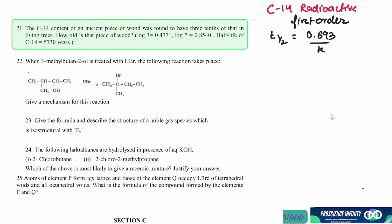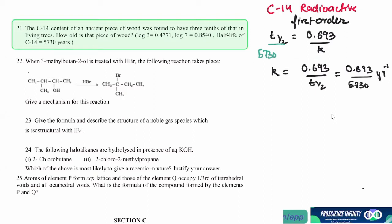In this problem, we are given the half-life to be 5730 years. So we can find K as 0.693 divided by T-half, which gives us K equal to 0.693 divided by 5730.